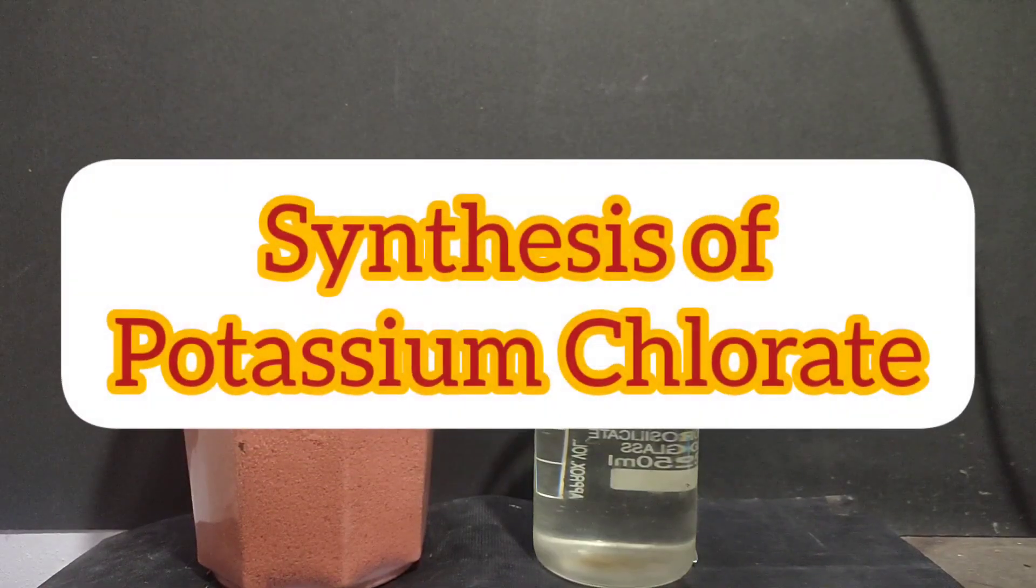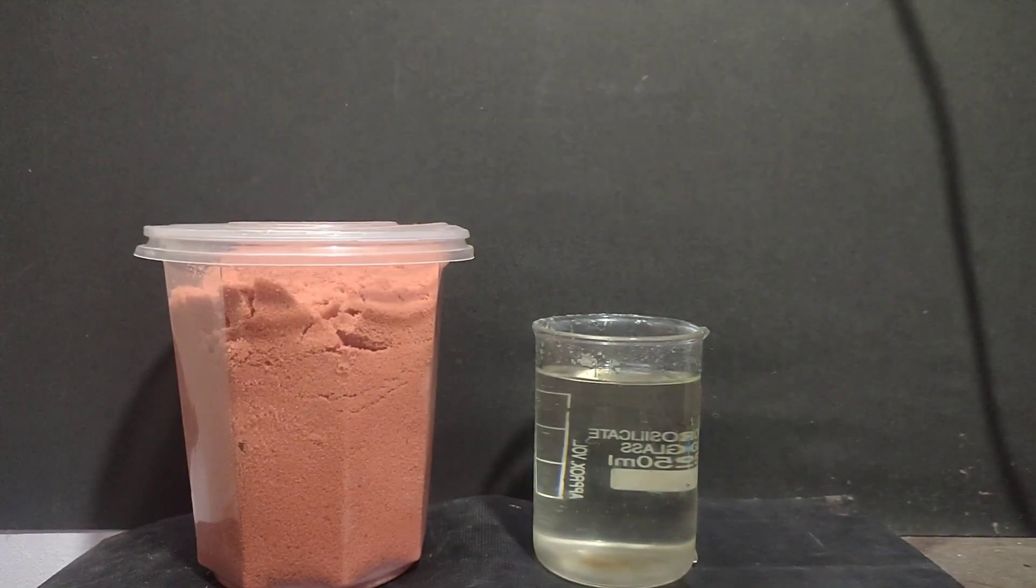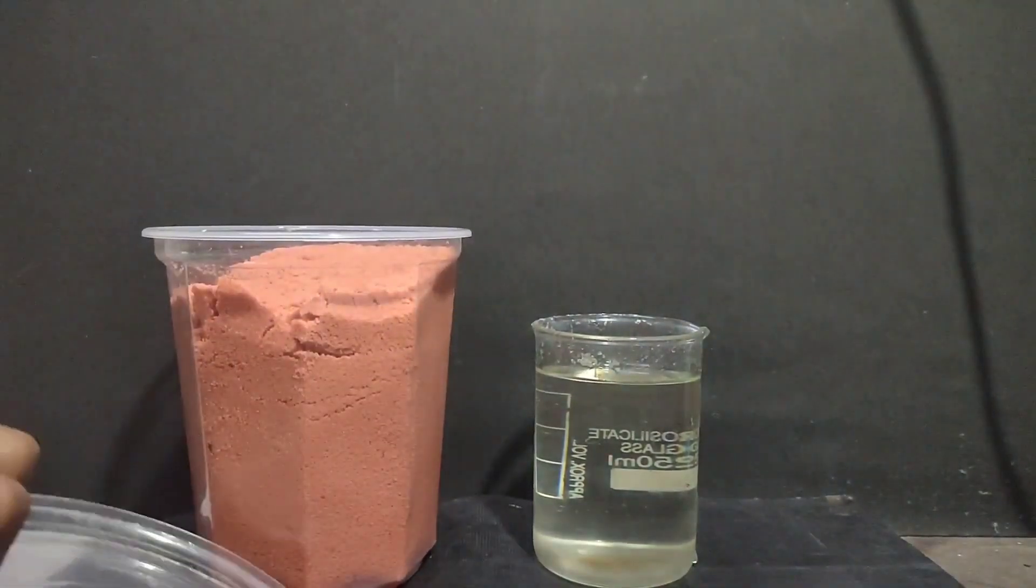In this video I will be making potassium chlorate by electrolysis. On the right I have a saturated solution which I made by dissolving this red colored fertilizer called muriate of potash, or in short MOP.